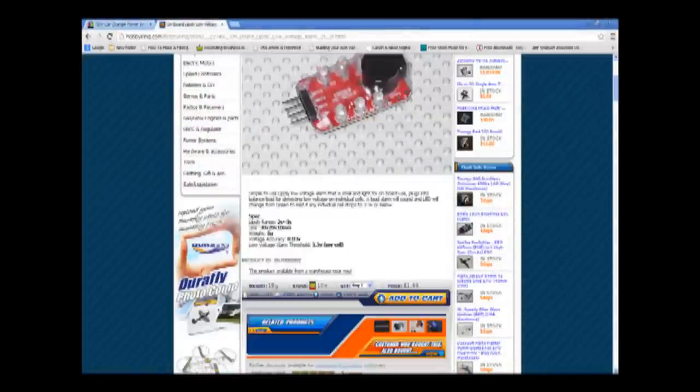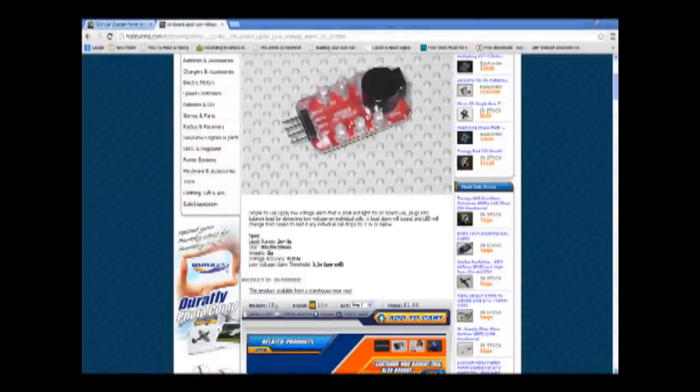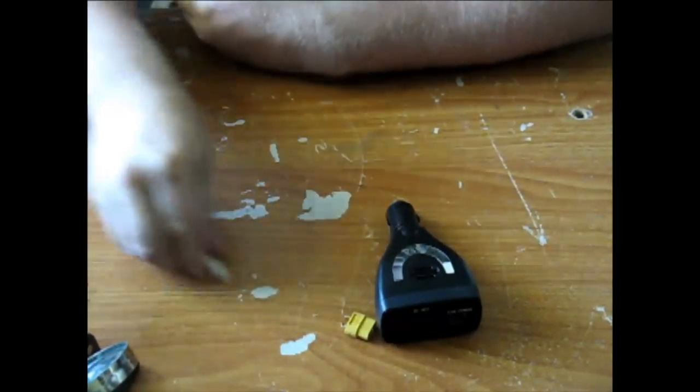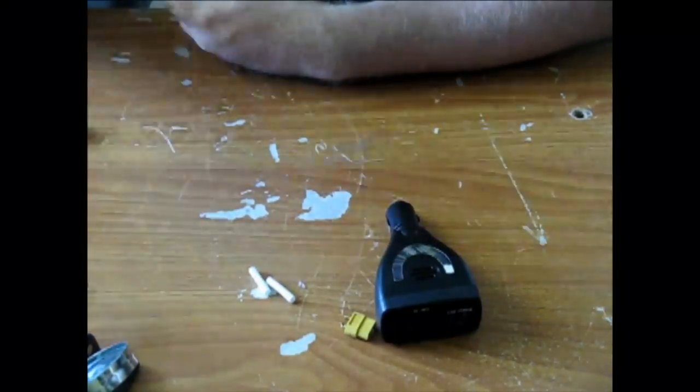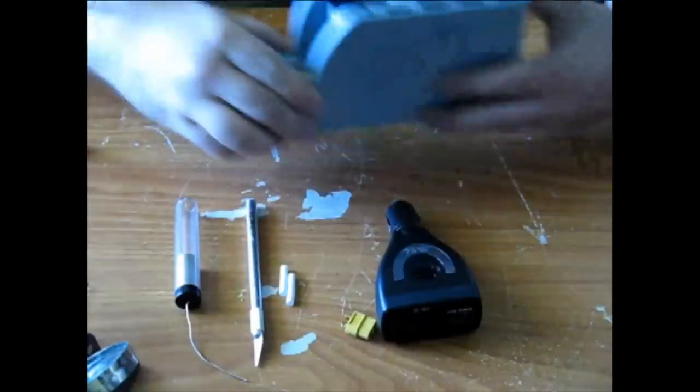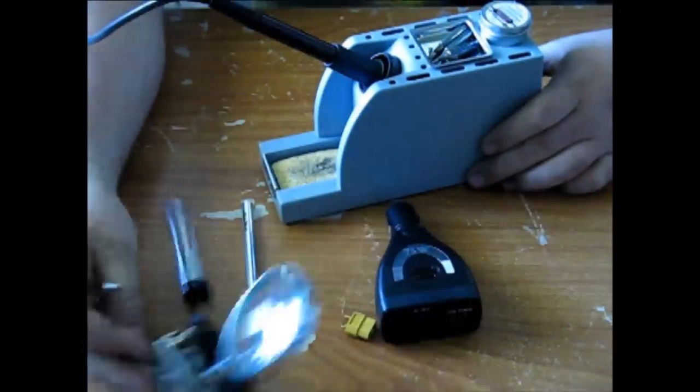I also highly recommend a low voltage buzzer like this one from Hobby King. It'll help you protect your batteries. You're going to need the battery connector of your choice. I'm using an XT60, some 4 millimeter heat shrink, an Xacto knife, some solder, preferably rosin core, a decent soldering iron, and a pair of helping hands.